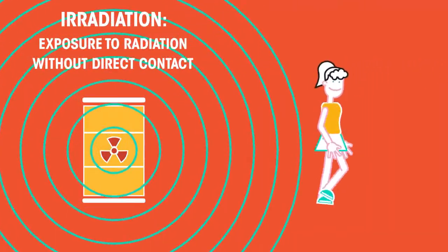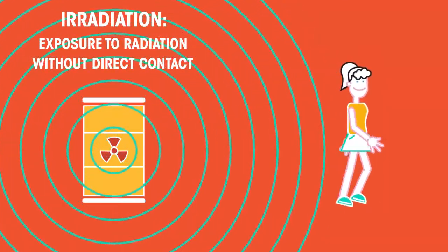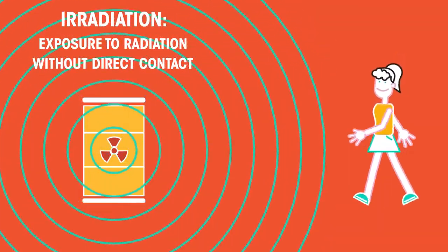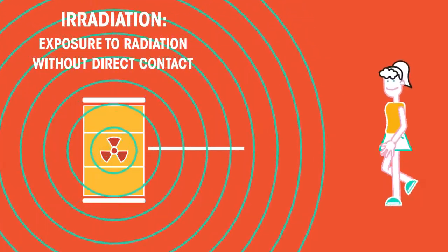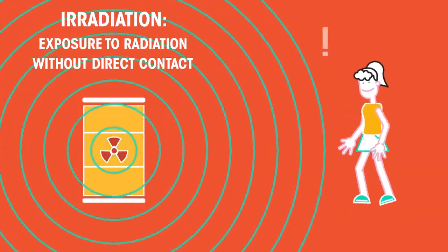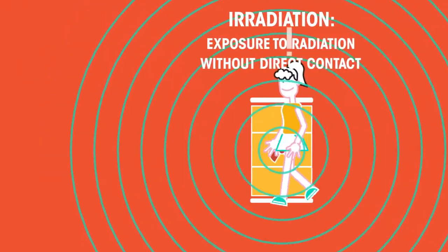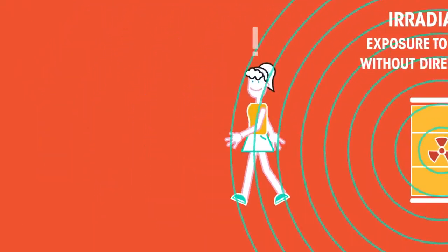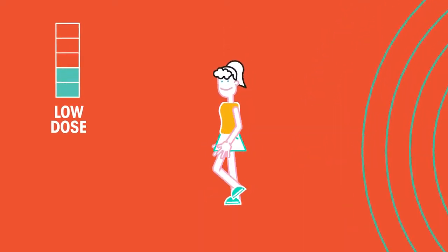Irradiation is when a person or object is exposed to radiation without coming into direct contact with the radioactive source. The person doesn't make direct contact with the radioactive barrel, but since irradiation can happen at a distance, the person is still at risk. The damage to the person only happens when the person is in the area of the radioactive waste. Therefore, the person is only exposed to the radiation for a short time and so receives a low dose of radiation.